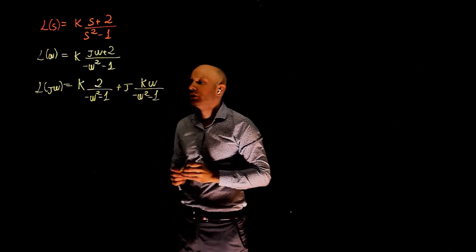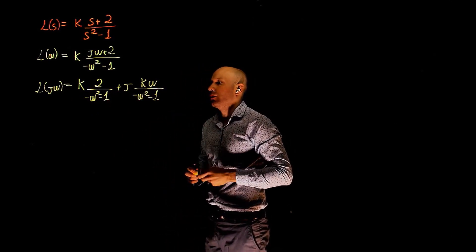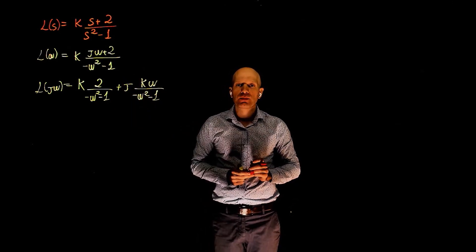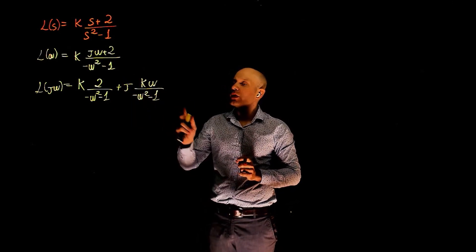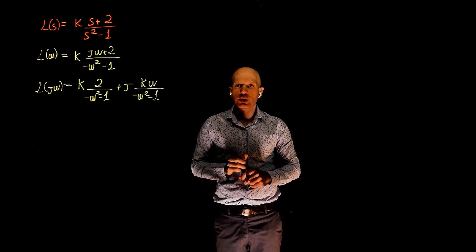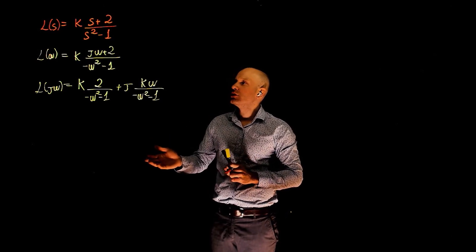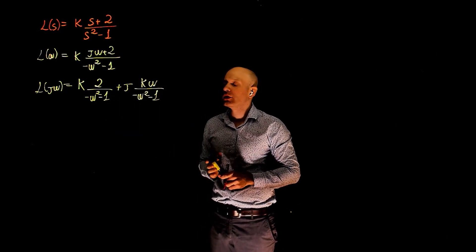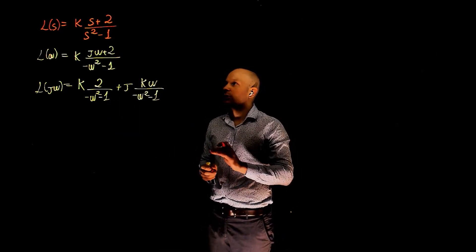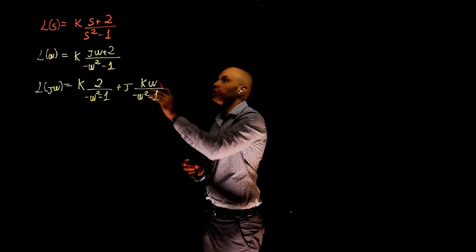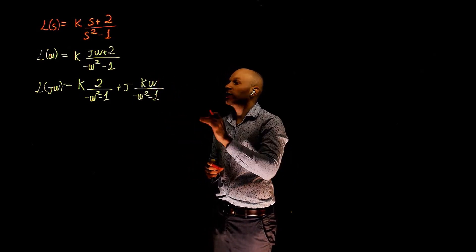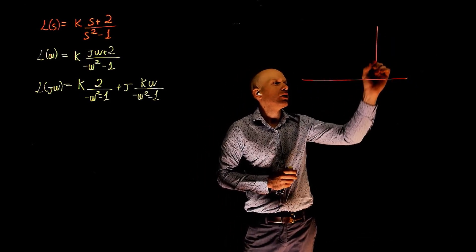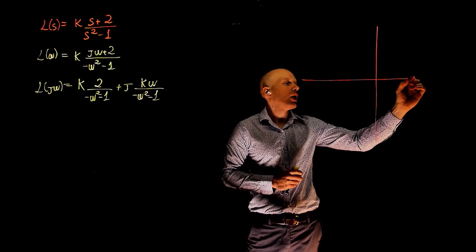The real and imaginary parts are clearly shown now. For this example, another good piece of news is that we don't have any poles at the origin, which means we only need to evaluate two points in the Nyquist contour: the point where the frequency tends to zero and the point where the frequency tends to infinity. And then, of course, find the real and imaginary axis crossings. We can draw the imaginary and real axis.